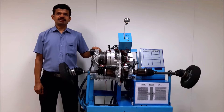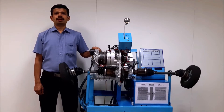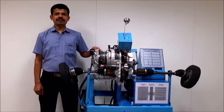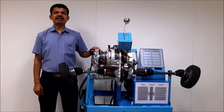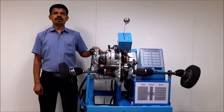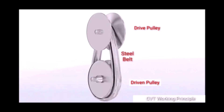Manual transmission has different fixed gear ratios, and the driver has to select a gear based on the requirement. In automatic transmission, various gear ratios can be obtained by a planetary gear set which is controlled by an automatic transmission control module. Whereas in CVT, infinity gear ratios can be obtained by changing the dynamics of drive and driven pulleys, which is controlled by the transmission control module. Let us understand the operating principle of drive and driven pulleys.